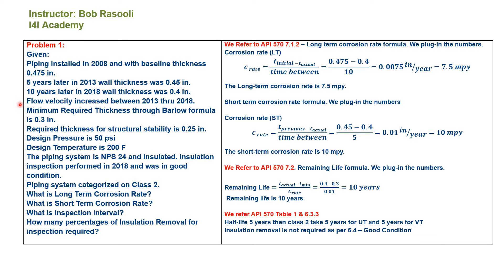Flow velocity increased between 2013 through 2018. Minimum required thickness through the Barlow formula is 0.3 inch. Required thickness for structural stability is 0.25 inch. Design pressure is 50 psi, and design temperature is 200 degrees Fahrenheit. The piping system is NPS 24 and insulated.